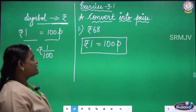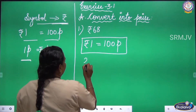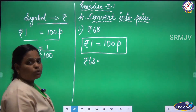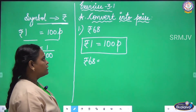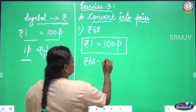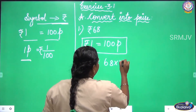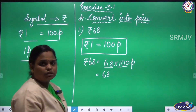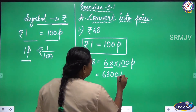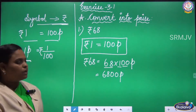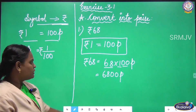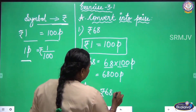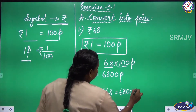We are going to see conversion of rupees into paise and paise into rupees. First: convert into paise. They have given in rupees. 1 rupee is equal to 100 paise. So 68 rupees equal to 68 into 100 paise. 68 into 1 is 68, then include 2 zeros at the end. So the answer is 68 rupees equal to 6800 paise.